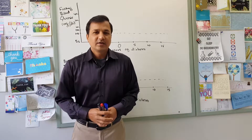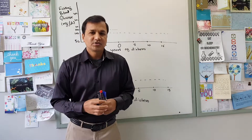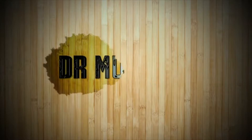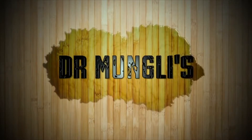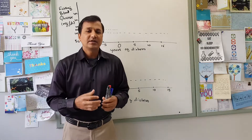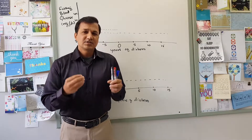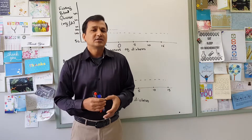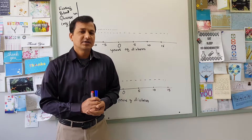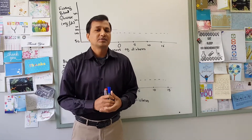Hey everyone, Dr. Mungli here. In this video, I will be briefly explaining what is the pathophysiology of type 2 diabetes mellitus. Type 2 diabetes mellitus is commonly seen in people who are overweight and obese. Obesity is one of the common causes for type 2 diabetes mellitus. Let's see why obesity and being overweight causes type 2 diabetes mellitus.